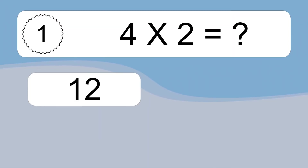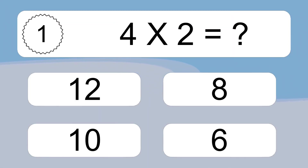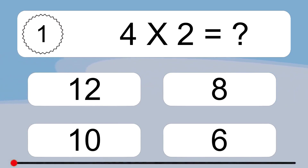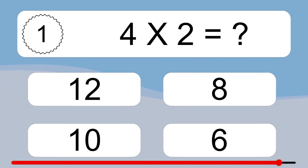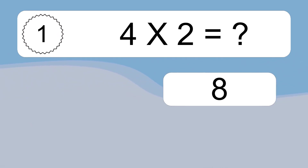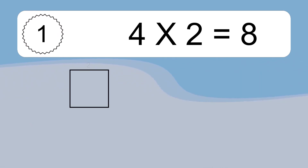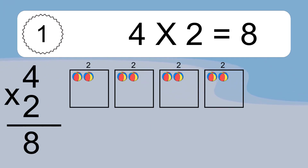4 times 2 equals what? 4 times 2 equals 8.